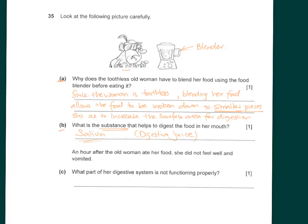An hour after the old woman ate, she did not feel well and vomited. Which part of the digestive system is probably not functioning properly? The answer is the stomach. It is not likely the intestine because food usually stays two hours or more in the stomach before moving to the intestine, and vomiting is induced by problems in the stomach.